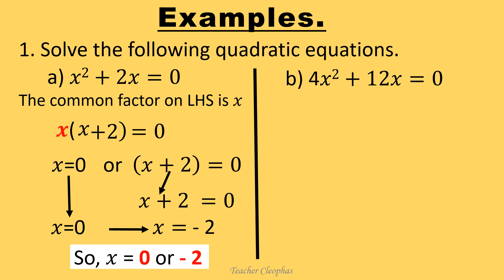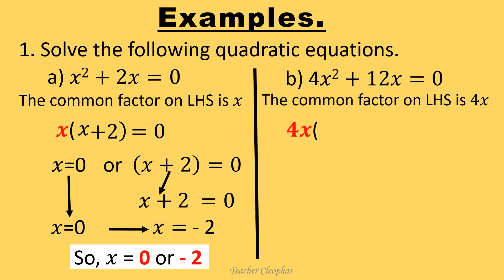We factorize and look for the common term on the left hand side. The common term is 4x. So we write 4x, then open brackets. Inside the brackets we have x, then plus 3. Then we close our brackets equals to zero.